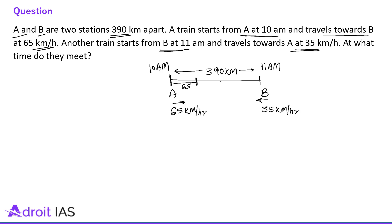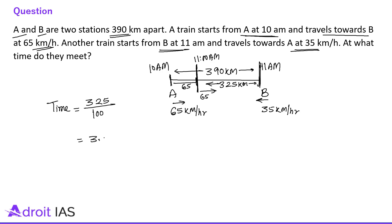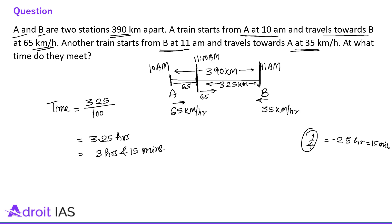The remaining distance is 325 km. At 11 AM, one train is moving towards B at 65 km per hour and the other is moving from B towards A at 35 km per hour. They are moving towards each other at 100 km per hour. So time = 325 divided by 100 = 3.25 hours. Now 3.25 hours means 3 hours and 15 minutes, because 0.25 hours is one-fourth of an hour, which equals 15 minutes.